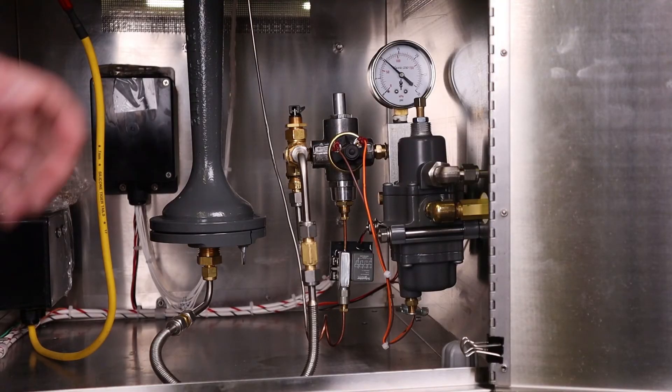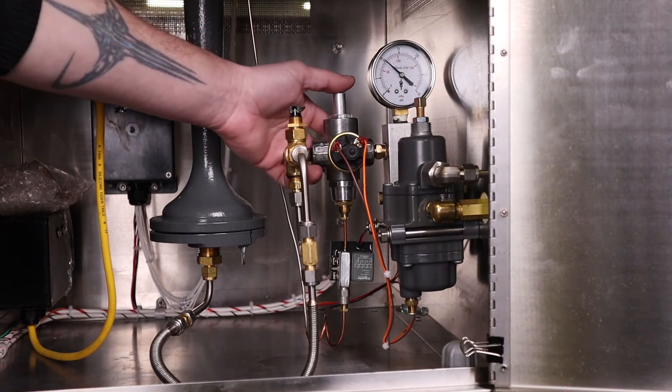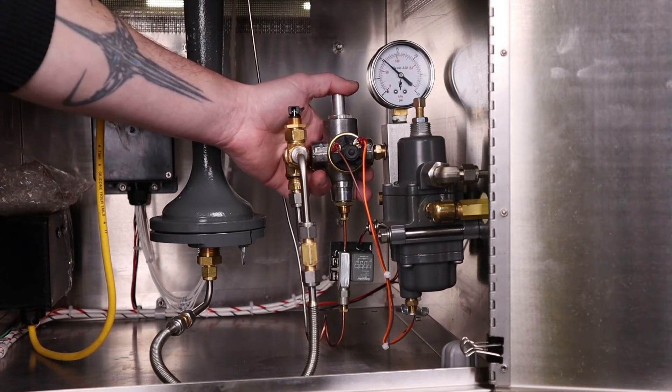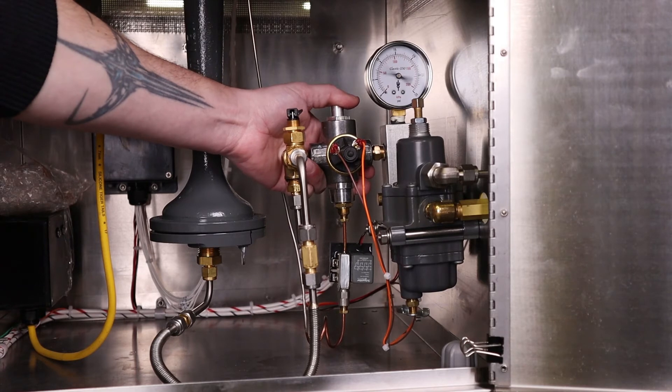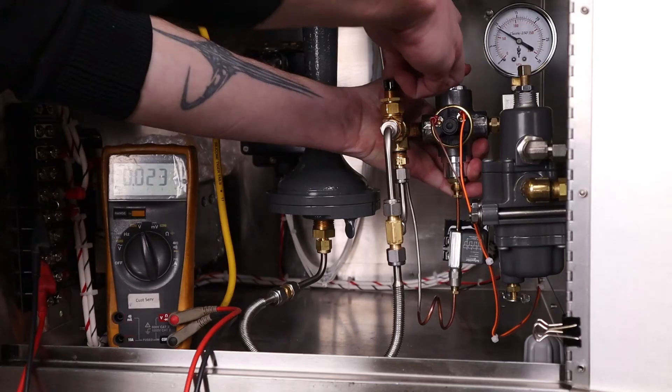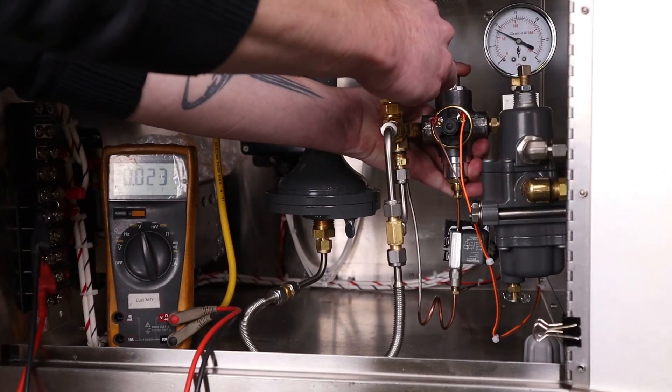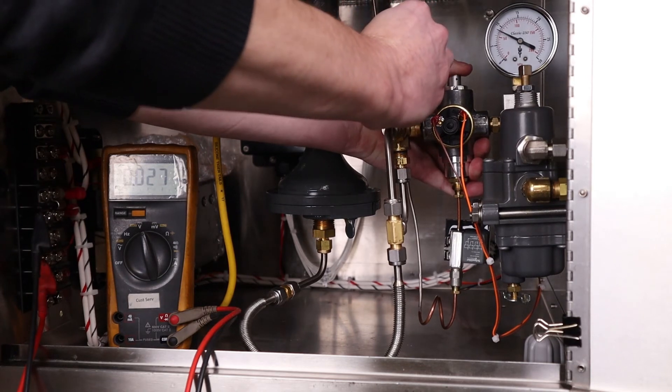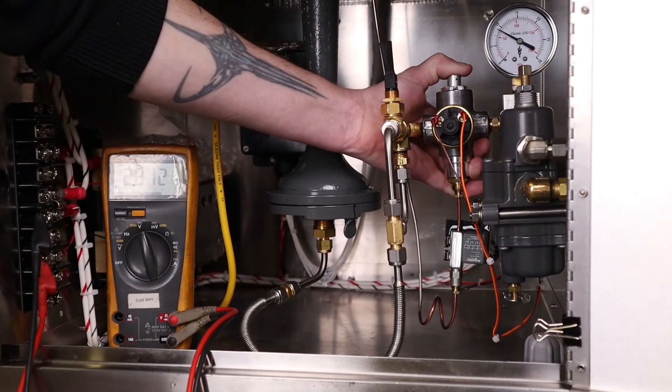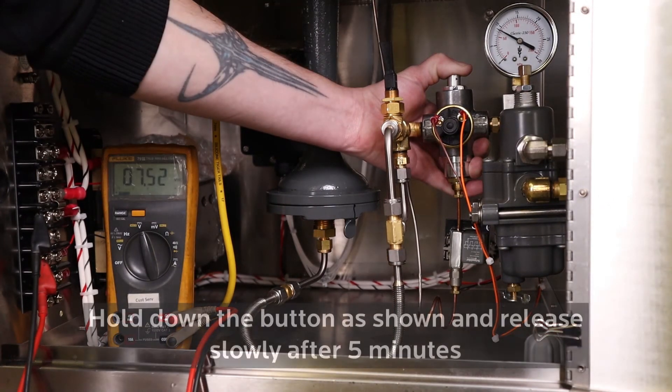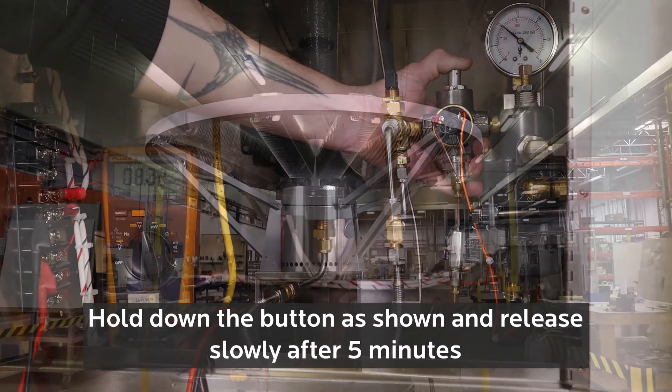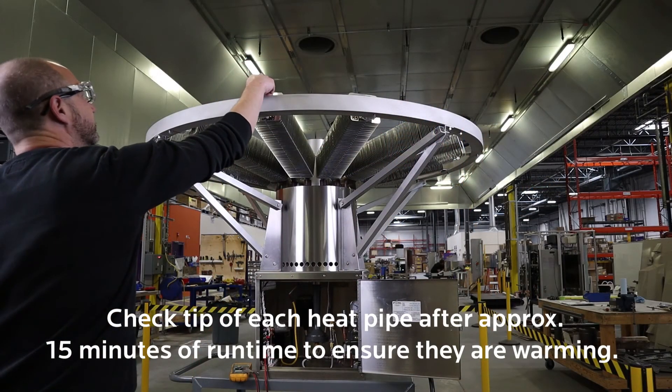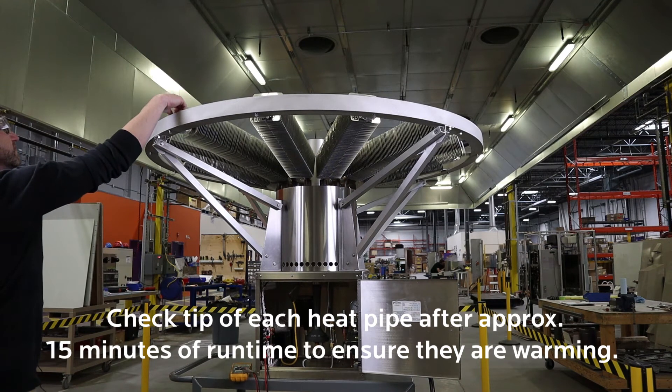Once done, we can press the button on the automatic shutoff valve and allow the flow of fuel into the spark igniter. Once combustion is heard, you want to open the burner run valve.